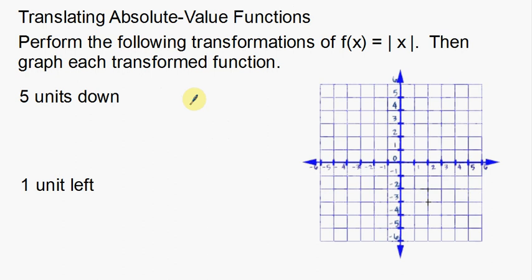Absolute values do something a little bit different to graphs, so we have to have an idea of what they look like. Let's read through the directions: perform the following transformations of f of x equals the absolute value of x, then graph each transformed function. What I'm going to do first is graph f of x on my grid here, so we have an idea of what we're moving up, down, left, and right.